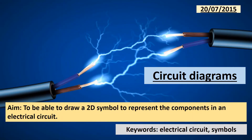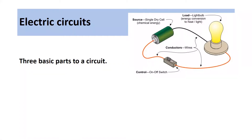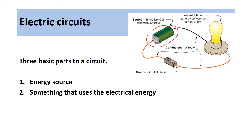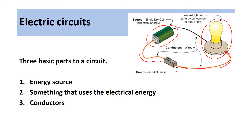In today's lesson, we're going to be learning about how to represent various components in an electrical circuit using 2D symbols. There are three basic parts to an electrical circuit. The first part is the energy source, represented by the dry cell. The second part is the object using the electrical energy, represented by the light bulb. The third part is the conductors, which are the wires, and they connect the various components to allow current to flow.